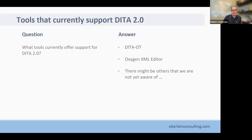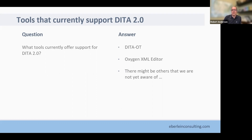Regarding tools that currently support DITA 2.0: there are different things you might mean by 'support.' At the most basic level, we have new grammar files for DITA 2.0, and any vendor tool that lets you put in your own grammar files would, by definition, let you put in the new 2.0 grammar files for editing. The Toolkit and Oxygen both ship recent copies of the beta grammar files so you can get that automatically. Other tools may be doing that too. As far as support for new features, that is more limited, and a lot of vendors may be waiting to see the spec become more final.